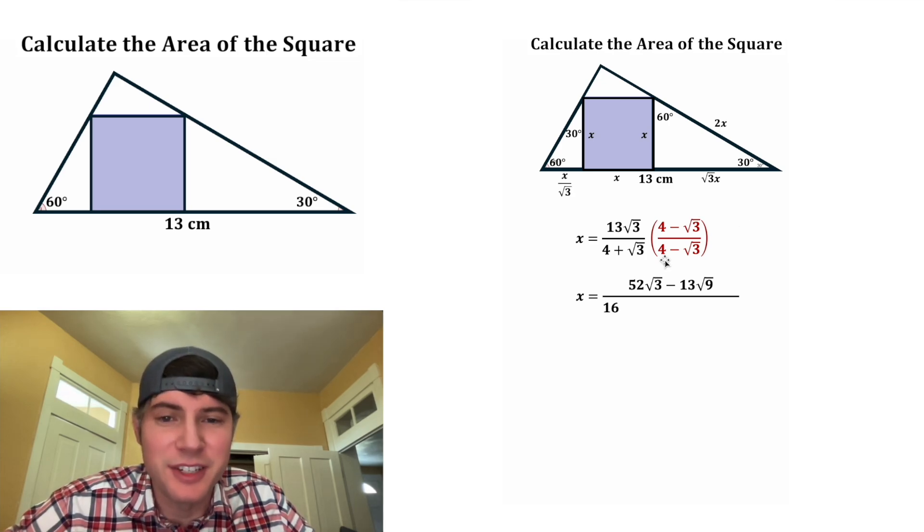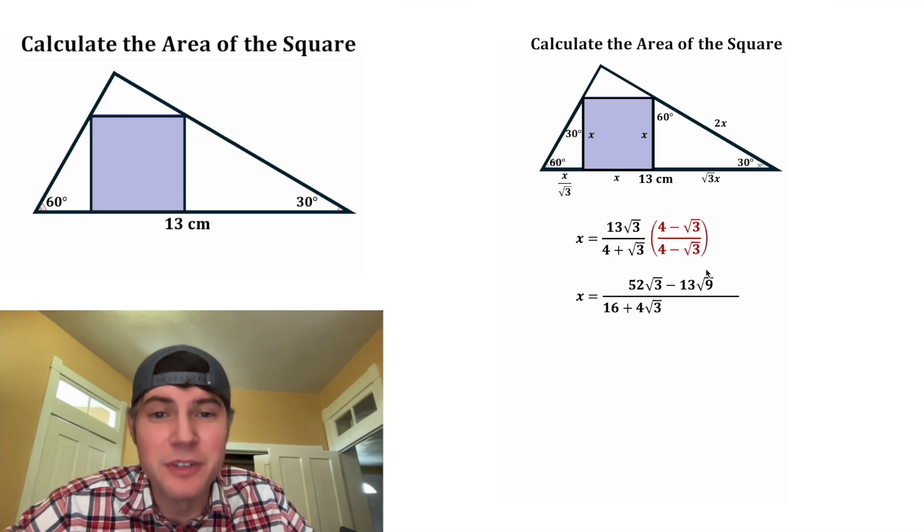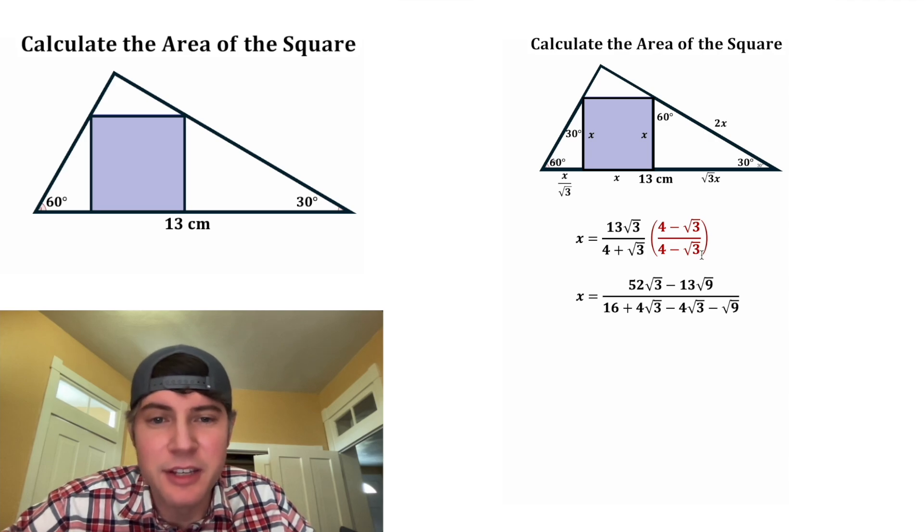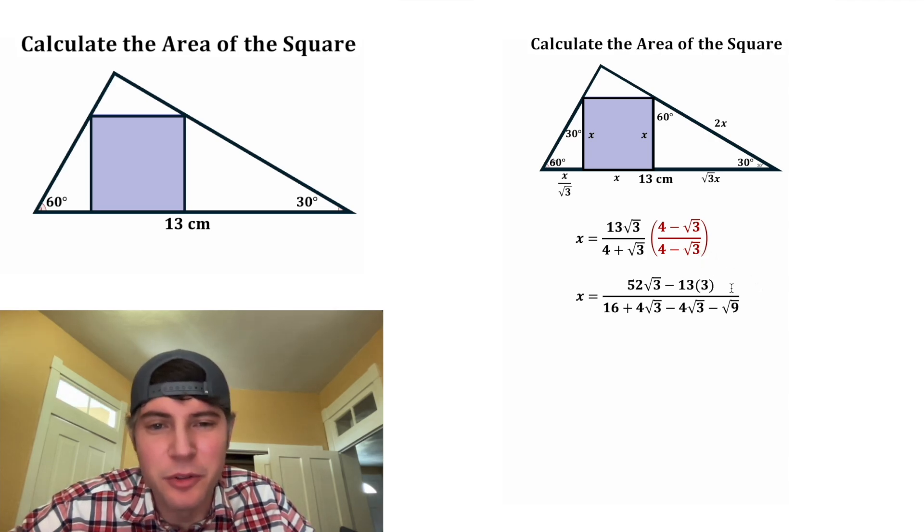And on bottom, four times four is 16. Root three times four is positive four root three. Four times negative root three is negative four root three. And root three times negative root three is negative root nine. For our numerator, square root of nine is equal to three, and 13 times three is equal to 39.